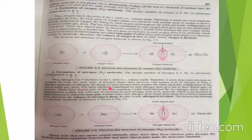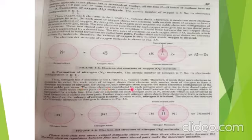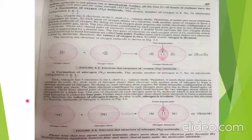By doing so, each nitrogen atom acquires a stable electronic configuration of the nearest noble gas, that is neon. The three electrons contributed by each nitrogen atom give rise to three shared pairs of electrons, and these three shared pairs of electrons constitute a triple bond between the two nitrogen atoms, which is represented by a triple line. So there are three electron pairs shared.